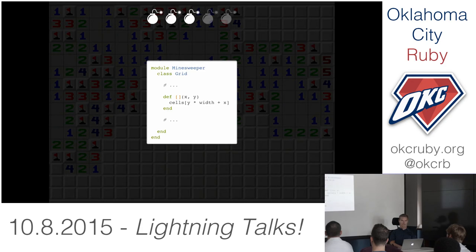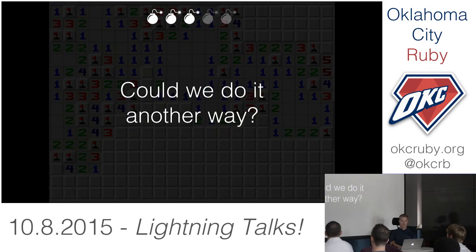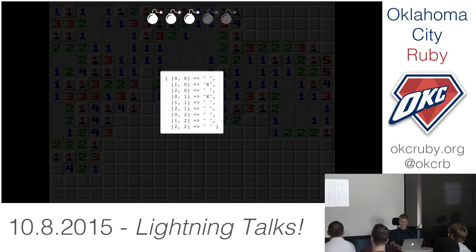So we solved it with a two-dimensional array, we solved it with a one-dimensional array. Could we solve it with something else? How about a hash? X and Y coordinates as the keys, contents of the cell as the values. We can do this as well, so let's change the code again.